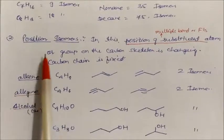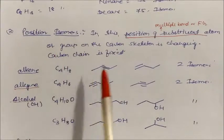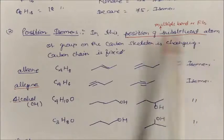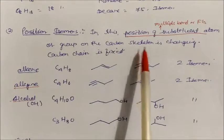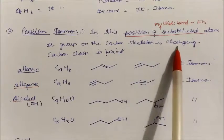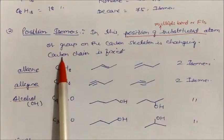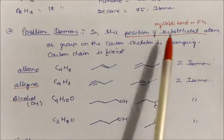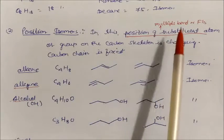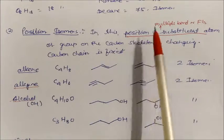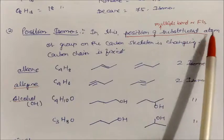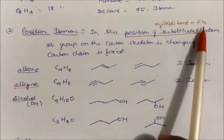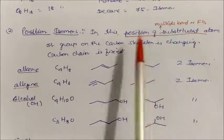The next type is position isomerism. Here the position of the substituted atom or group on the carbon skeleton changes, but the carbon chain remains fixed. We are talking about the position of substituent atoms — specifically multiple bonds or functional groups — changing position.